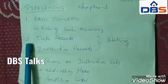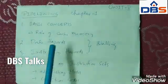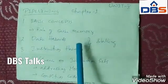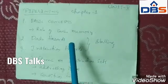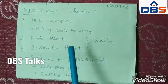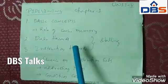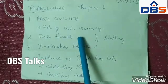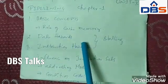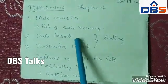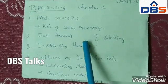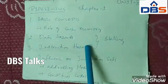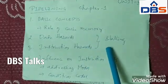Coming to the second topic: Data Hazards. A data hazard is a situation in which the pipeline is stalled because the data to be operated on is delayed for some reason — whether data is accessed quickly from cache memory or accessed from primary memory causing a delay. At that time, the pipeline is stalled, meaning the process is postponed to the next or different cycles. This is called stalling.